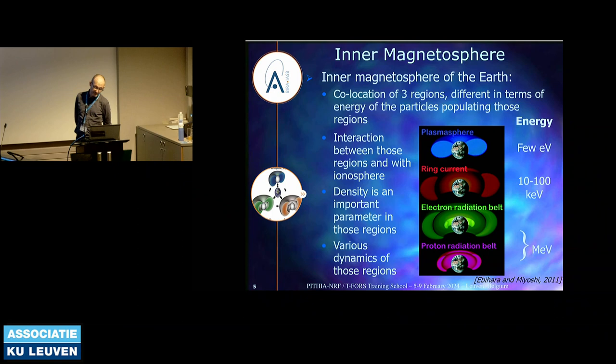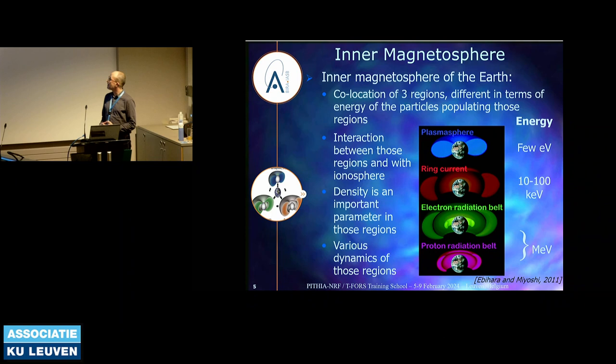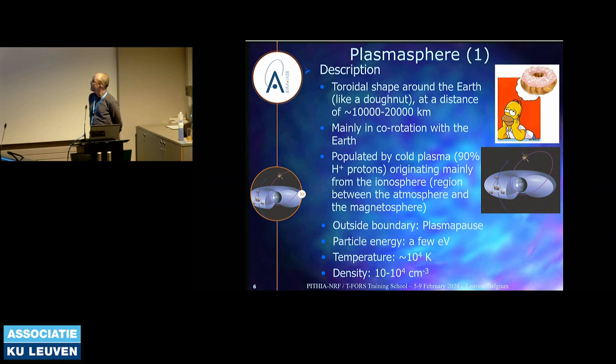Some of these regions interact with one another — the plasmasphere with the radiation belt, and also with the ionosphere which is below. Those regions have various dynamics. For example, the plasmasphere reacts much faster than the radiation belts, which are a bit more stable. The density is an important parameter in those regions — the density of electrons — and it also defines these regions, along with the energy.